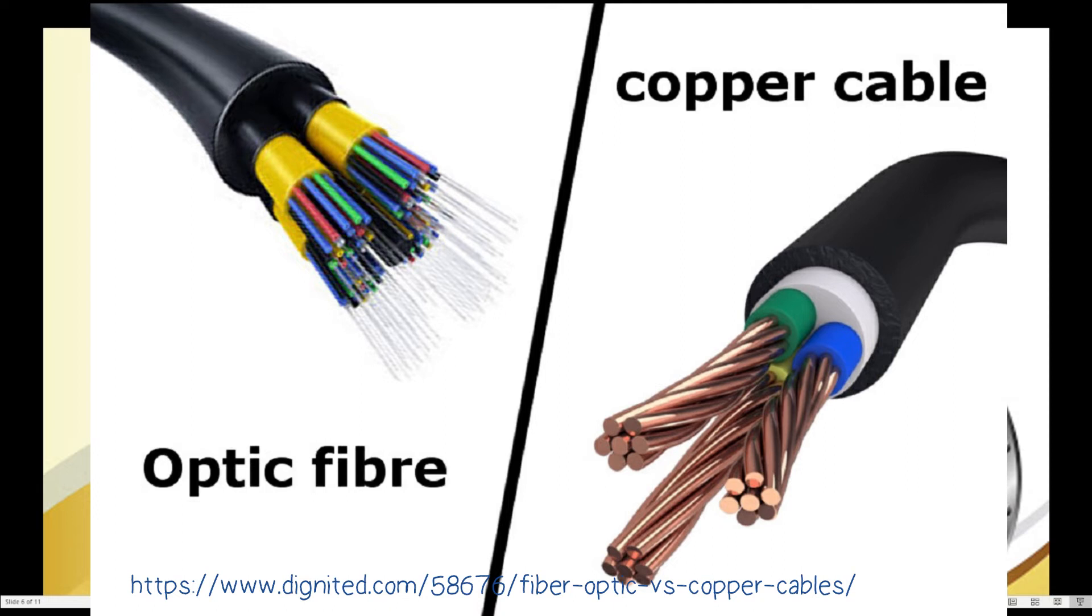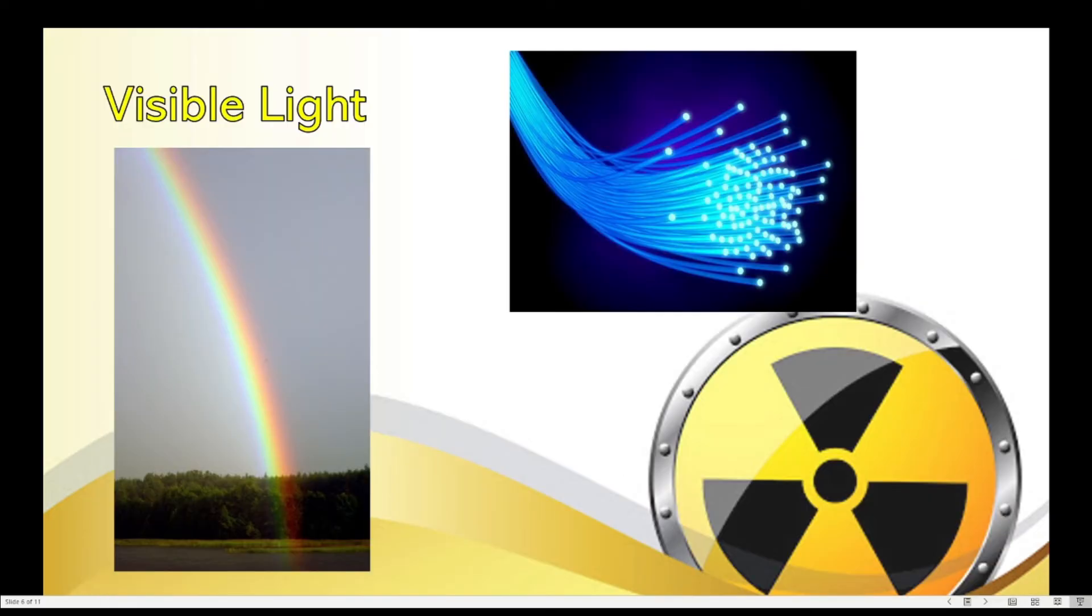And then, they are also lighter and thinner. So, copper cables, we know, are sometimes stolen because they'll be sold. They are quite heavy when put together. So, fiber optic cables are lighter and thinner. And usually, these are placed underground. So, those are just some of the advantages of fiber optic cables over the copper cables. So, again, fiber optic cables use visible light in order to transmit data.